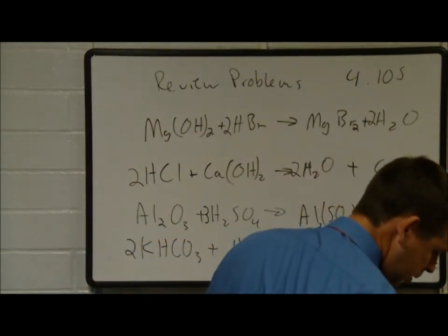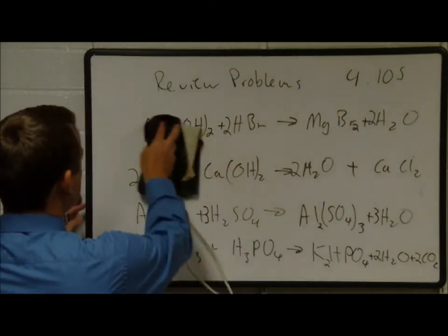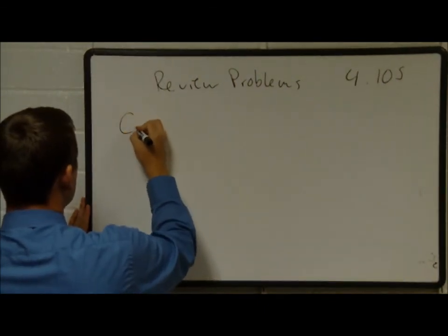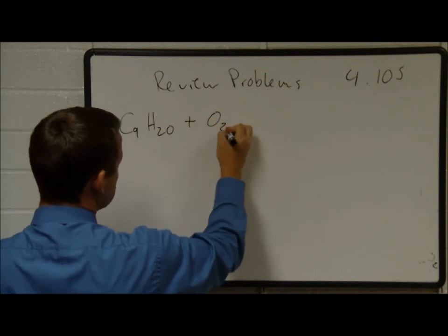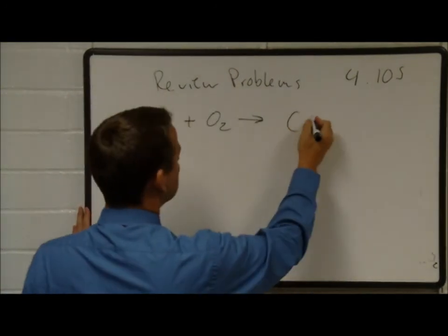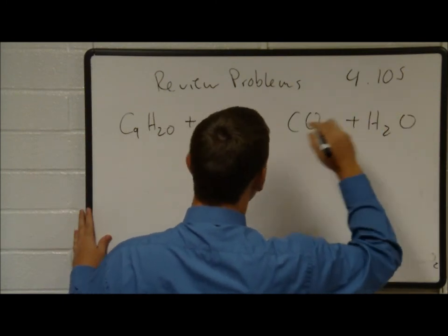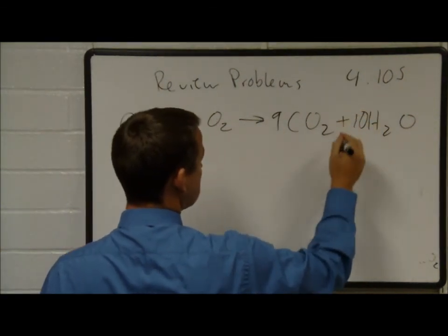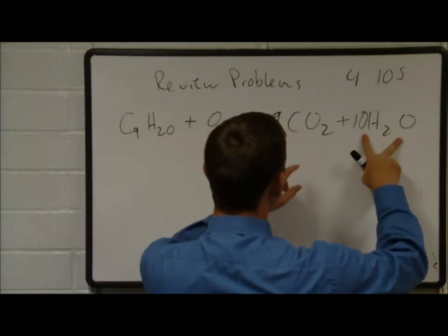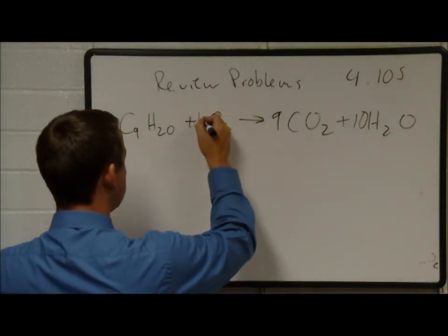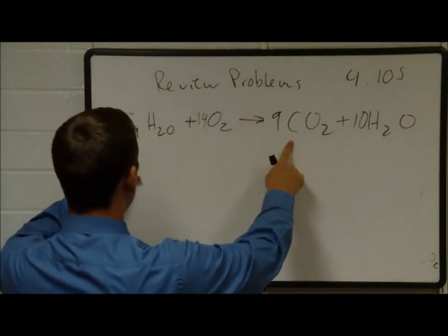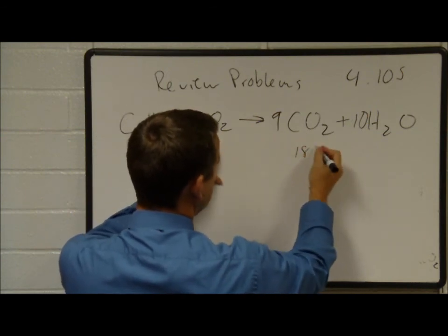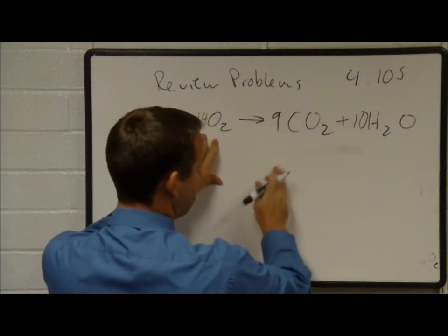Problem 4.105D: nonane, C9H20. This is a combustion reaction. Start with 9 CO2 for the 9 carbons, and 10 H2O for the 20 hydrogens. We need 10 plus 18 = 28 oxygens, so 14 O2 molecules. Check: 9 carbons each side, 20 hydrogens each side, 14×2=28 = 18+10=28 oxygens. Balanced.